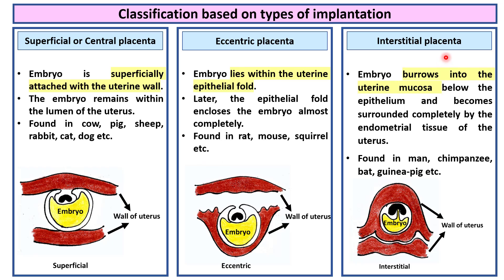Interstitial placenta. In interstitial placenta, the embryo burrows into the uterine mucosa below the epithelium and becomes surrounded completely by the endometrial tissue of the uterus. This is found in man, chimpanzee, bat, guinea pig, etc.